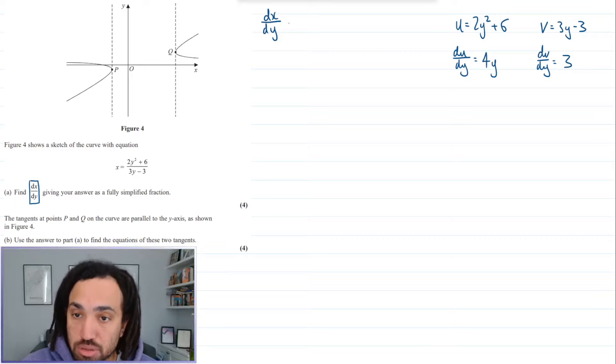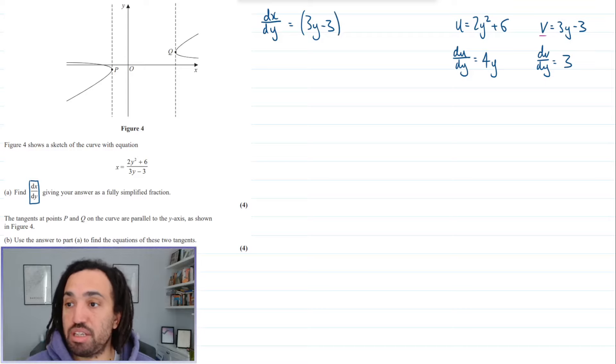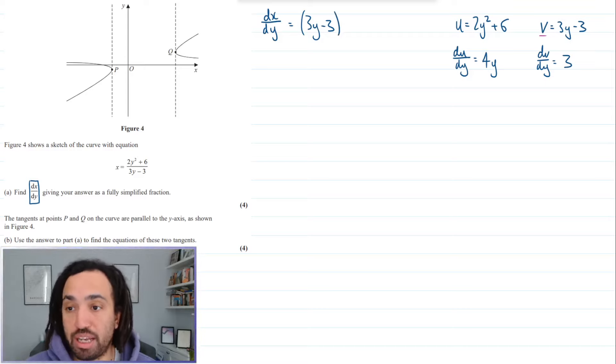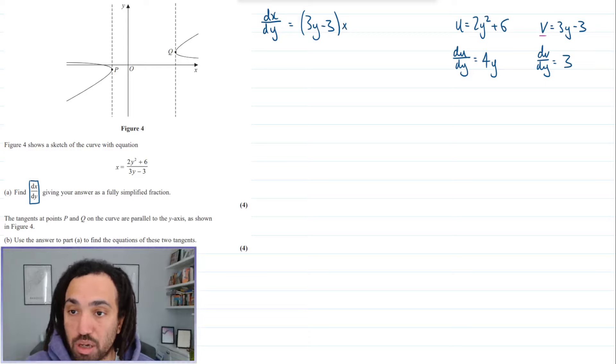So how does the quotient rule work? Well it starts with v which is this one. So I write this here and then I multiply that by the du by in this case dy, so times that by 4y.